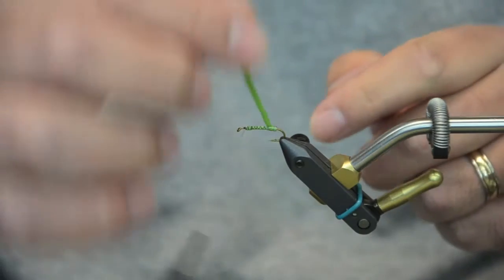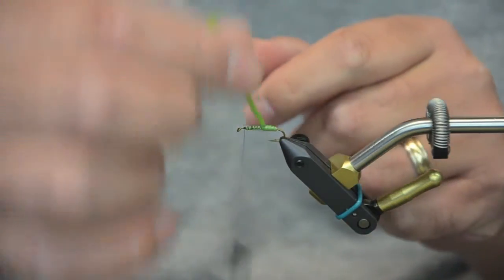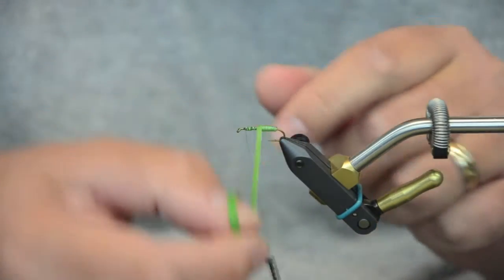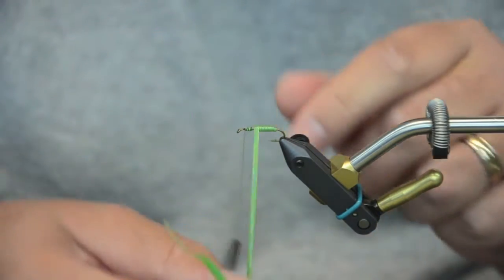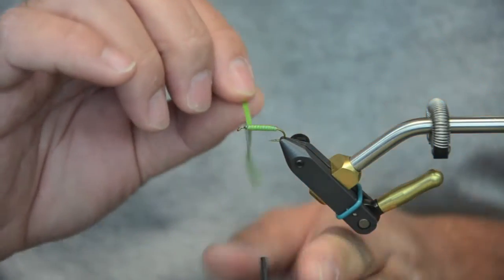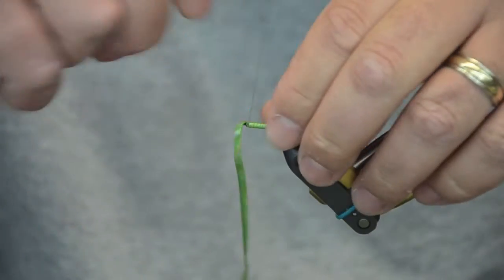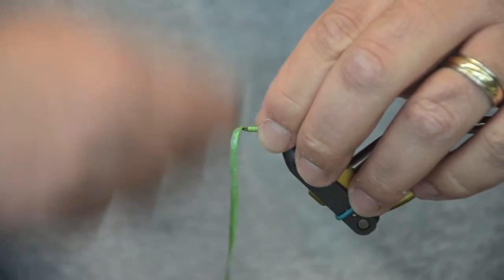When you wrap this material, it's important to note I'm just loosely laying this and I'm building a rather thick little body. But I'm overlapping it by about half on each wrap and that gives the segmentation. And then I'll pull this snug. It's sticky enough that it really lays nicely when you do that.